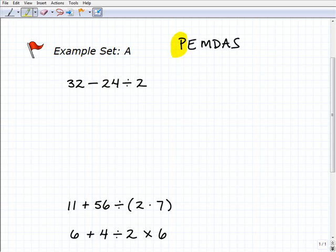Remember P is what we're going to do first, and that is all the things inside of parentheses or other type of grouping symbols. And then we're going to look for E's in our problem, which stands for exponents or powers. And then we're going to tackle multiplication and division, whichever one we see first from left to right, and then addition, subtraction, whichever we see first from left to right. So this is the order.